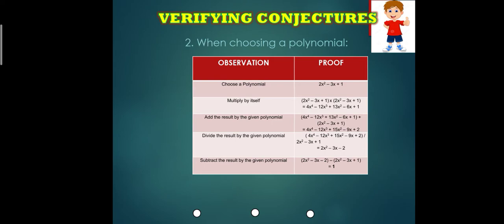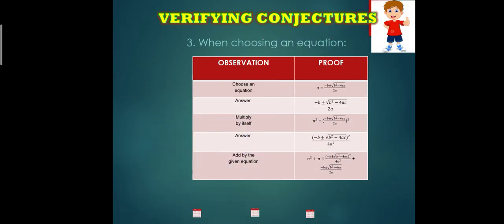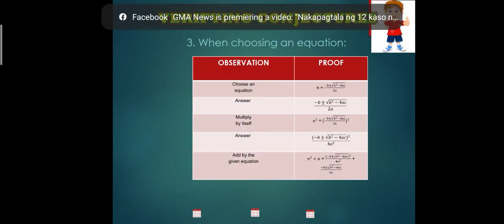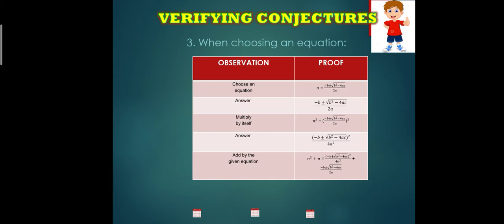So to constant and to polynomial, it's true. So how about trying it for an equation? We tried it to an equation very common to us, the quadratic formula, which is negative B, positive and negative square root of B squared minus 4AC all over 2A.